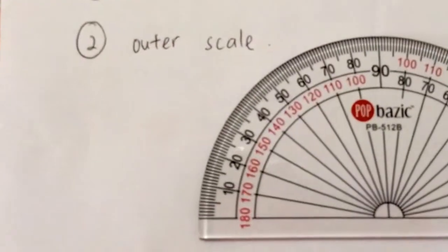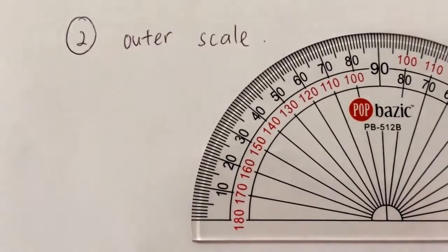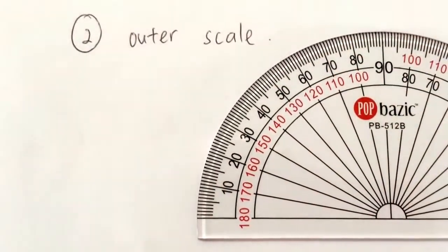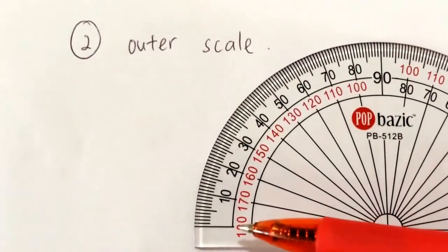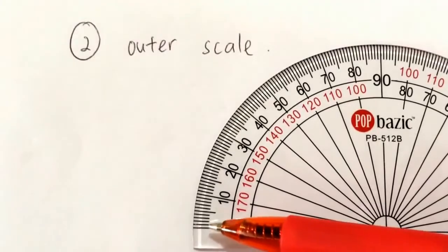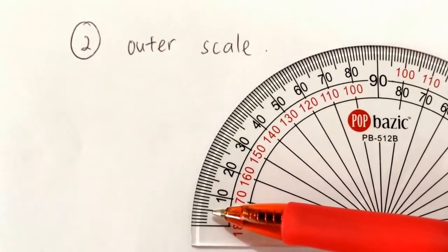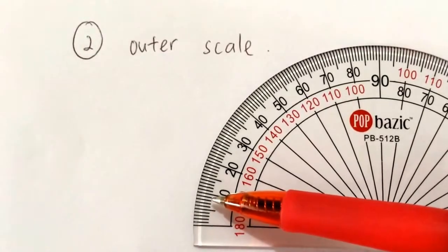Let's say I'm measuring an angle using the outer scale. This is 0, 1, 2, 3, 4, 5, 6, 7, 8, 9, 10.